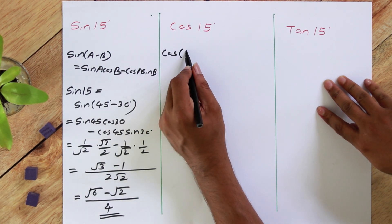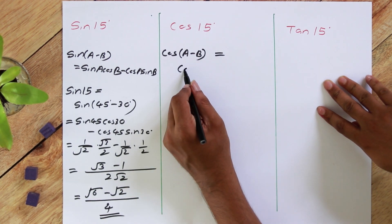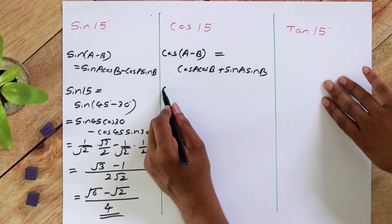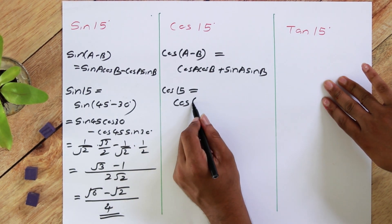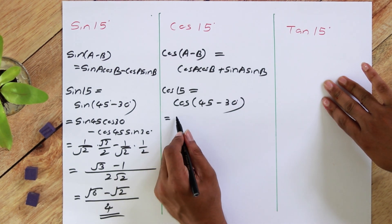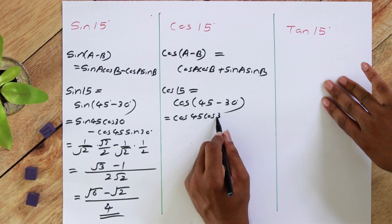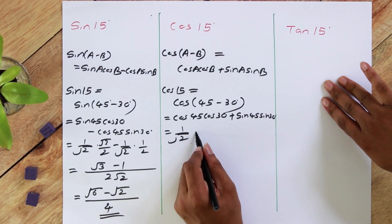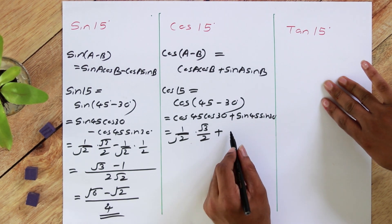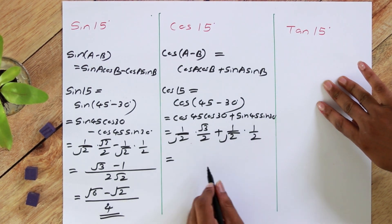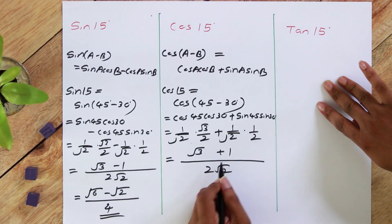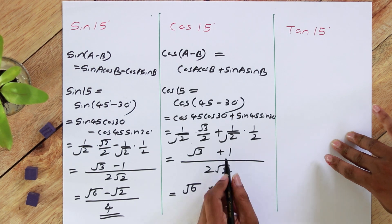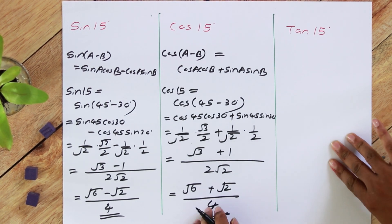Moving on to cos 15. We use the difference identity: cos(A minus B) equals cos A cos B plus sin A sin B. For cos 15, we write cos(45 minus 30): cos 45 cos 30 plus sin 45 sin 30. Cos 45 is 1 over root 2, cos 30 is root 3 over 2, sin 45 is 1 over root 2, sin 30 is 1/2. The denominator is 2 root 2, and above we have root 3 plus 1. Rationalizing gives (root 6 plus root 2) over 4.